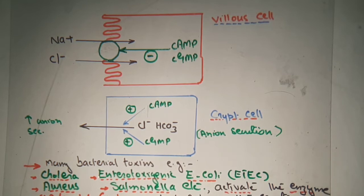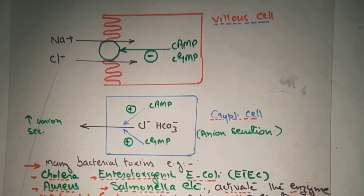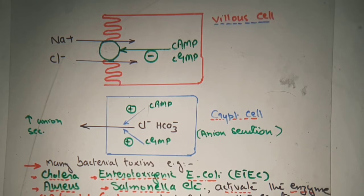Many bacterial toxins — for example cholera, enterotoxigenic E. coli, Staphylococcus aureus, Salmonella, etc. — are microorganisms responsible for diarrhea. They cause activation of the enzyme adenylyl cyclase, which enhances secretion after 3 to 4 hours and persists for 36 hours.